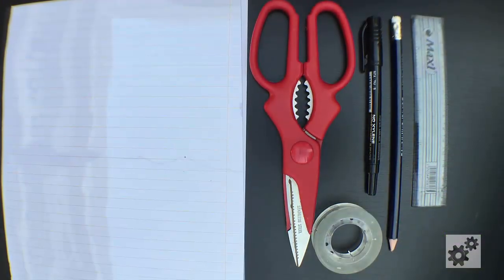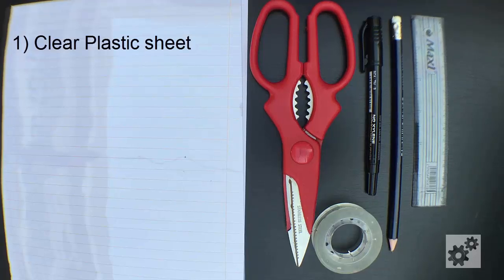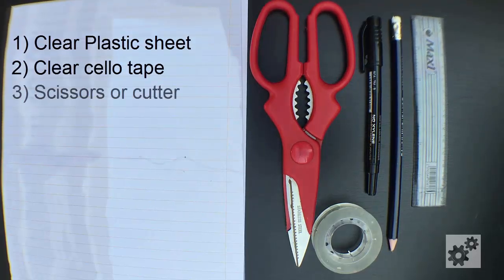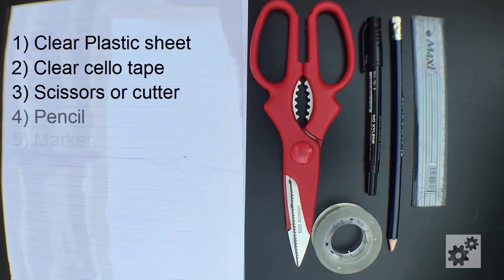These are the things you will need: a sheet of clear plastic, clear cello tape, scissors or a cutter, a pencil, a marker, and a ruler.